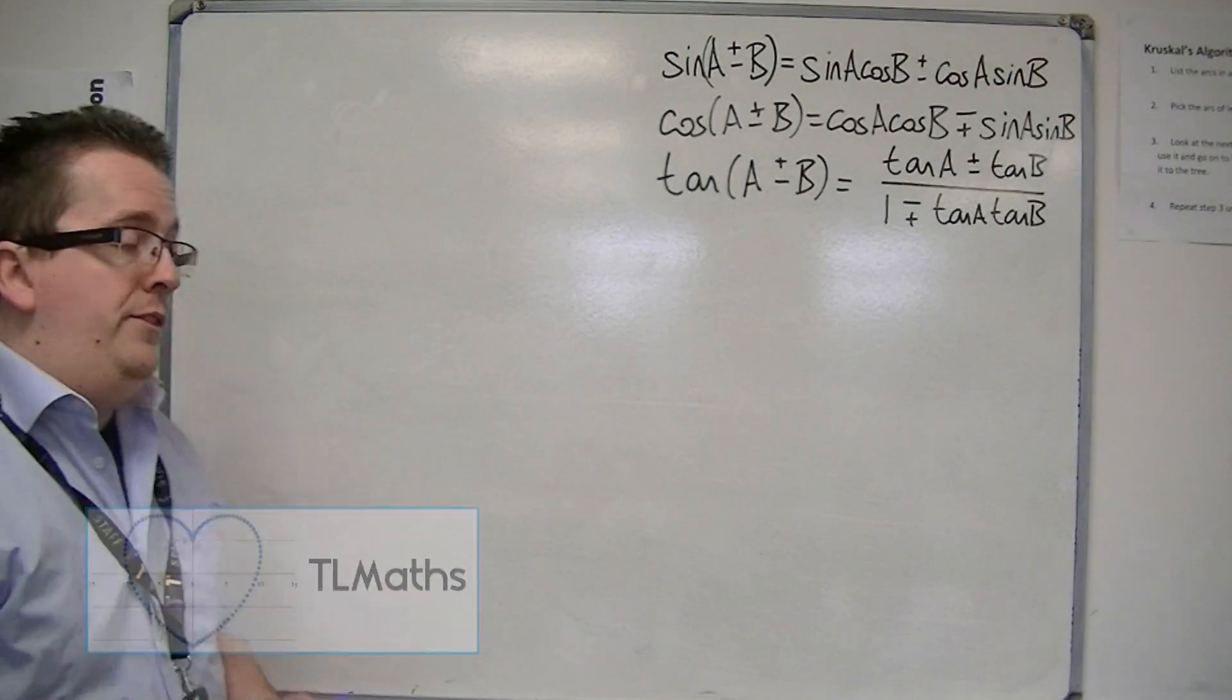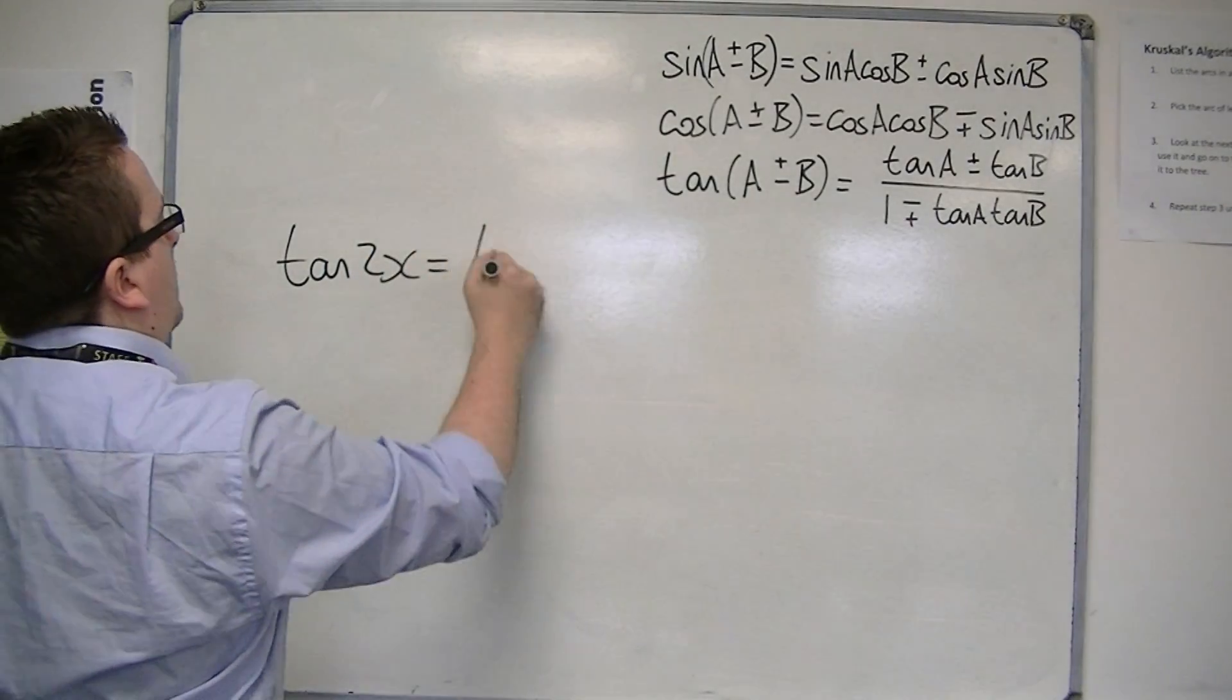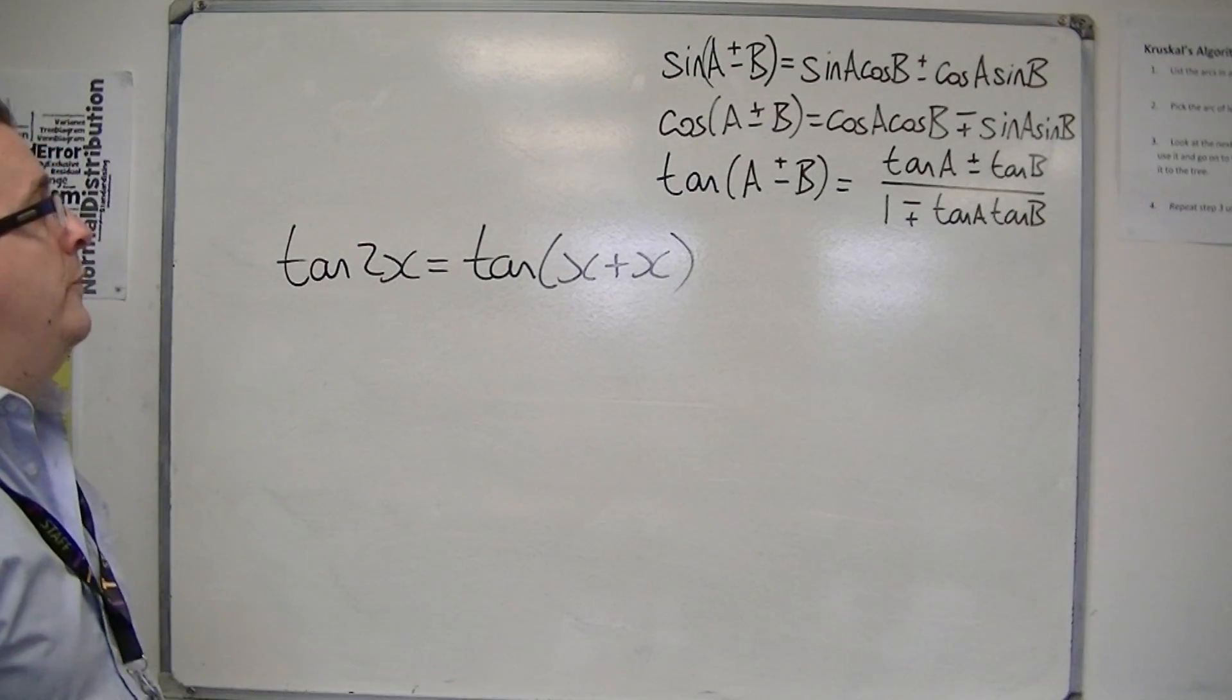So last but not least, we have tan 2x. Tan 2x, I'm going to write as tan of x plus x, like I've done for sin 2x and cos 2x beforehand.